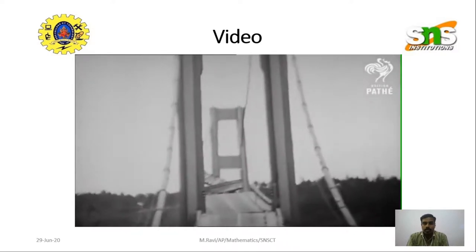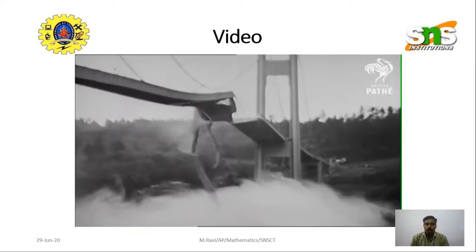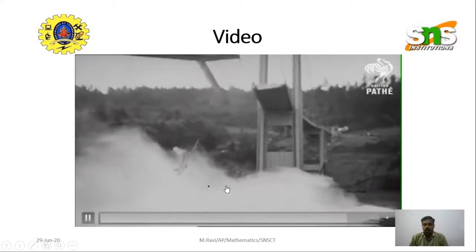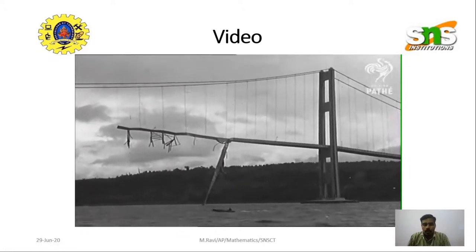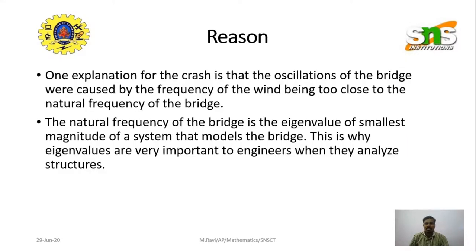So what was the reason for the collapse? One explanation is that the oscillation of the bridge was caused by the frequency of the wind being too close to the natural frequency of the bridge. The natural frequency of the bridge is essentially the eigenvalue — specifically the eigenvalue of smallest magnitude of the system that models the bridge. This is why eigenvalue analysis is so important to engineers when they analyze structures.